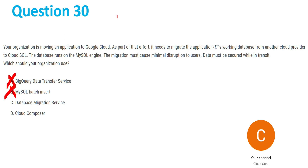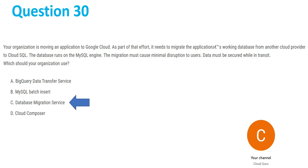Now out of C and D — Database Migration Service and Cloud Composer — Cloud Composer is related to microservices such as Kubernetes and is based on Apache Airflow. It deals with microservices, which is not what the question requires. So A, B, and D have been eliminated, and clearly C is our answer. Finally, C — Database Migration Service — is the answer for question 30.